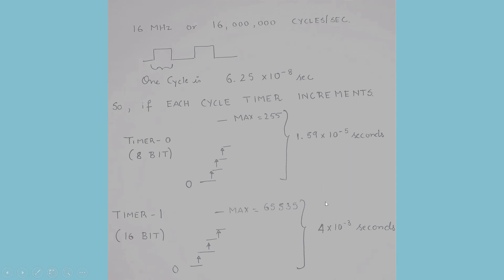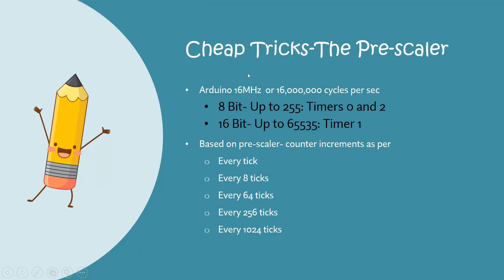So we use a trick: a pre-scaler, which tells the Arduino that instead of incrementing this value for every clock cycle it's going to be incremented for every 8 cycles, or every 64 cycles, or every 256 cycles, or sometimes even every 1024 cycles. When we do this the timers get fired at more reasonable periods of time, making them very useful devices for the real world. So this completes our basics for the use of timers in Arduino Uno — I shall be covering some more details in a future video.